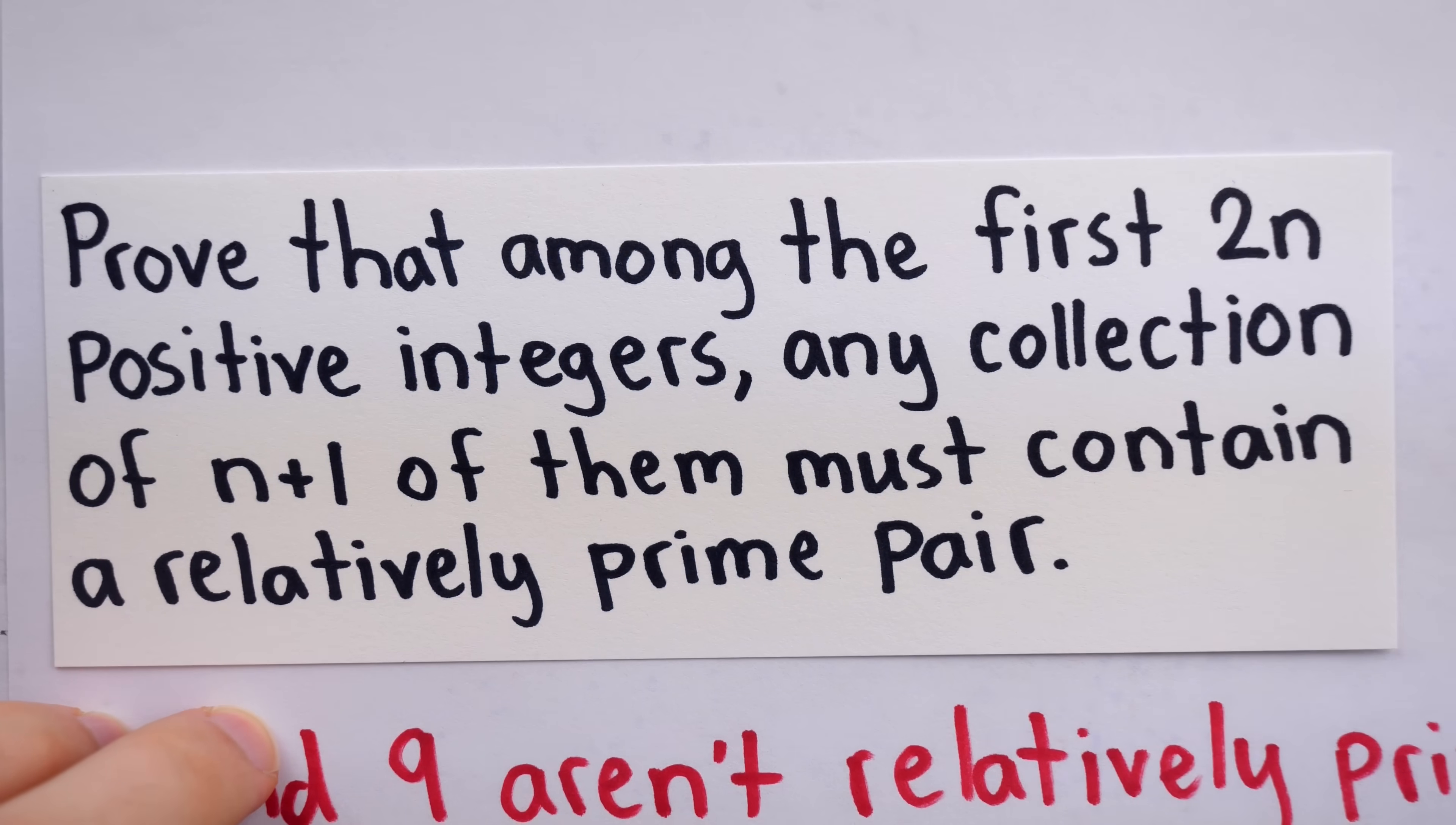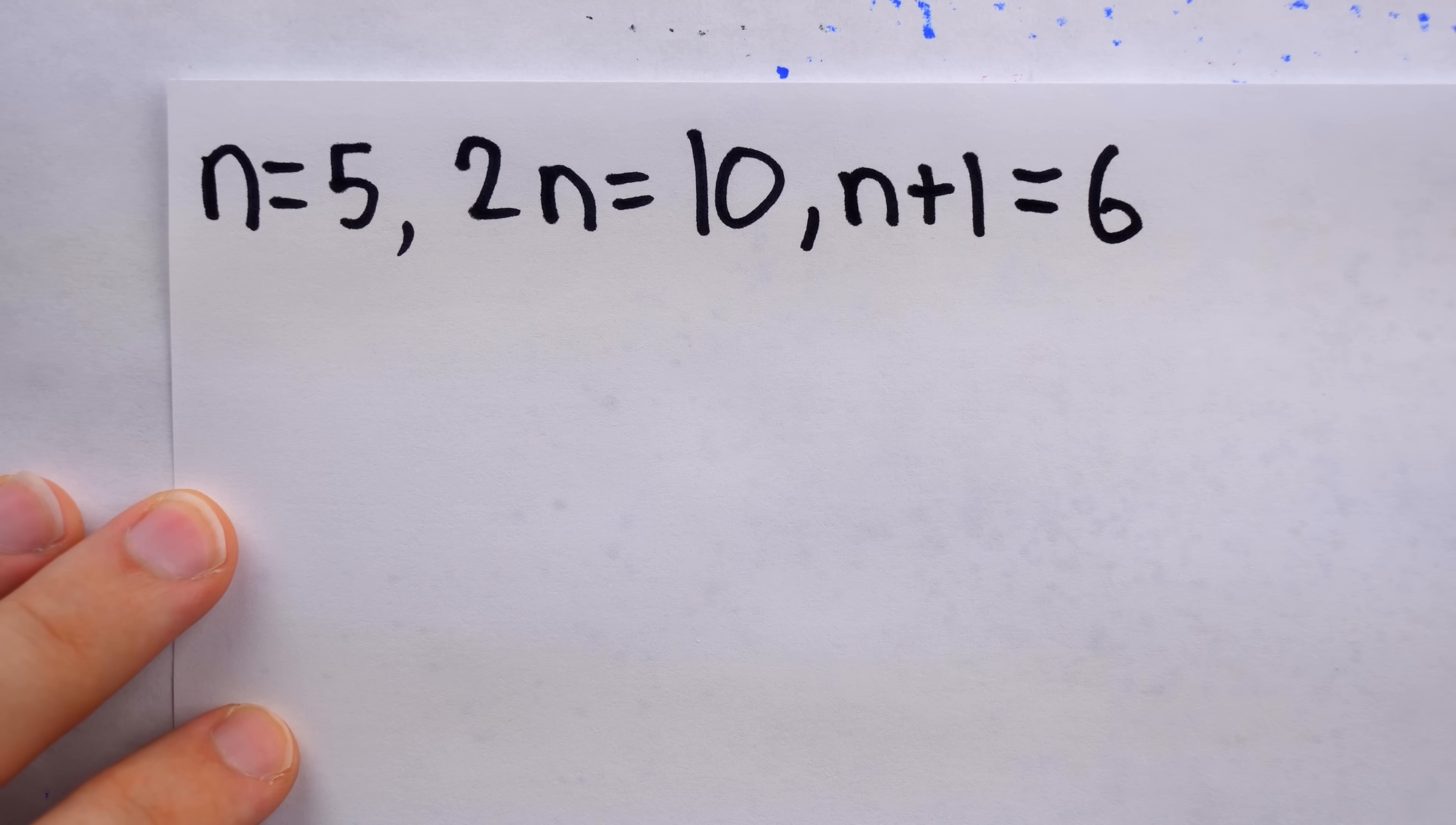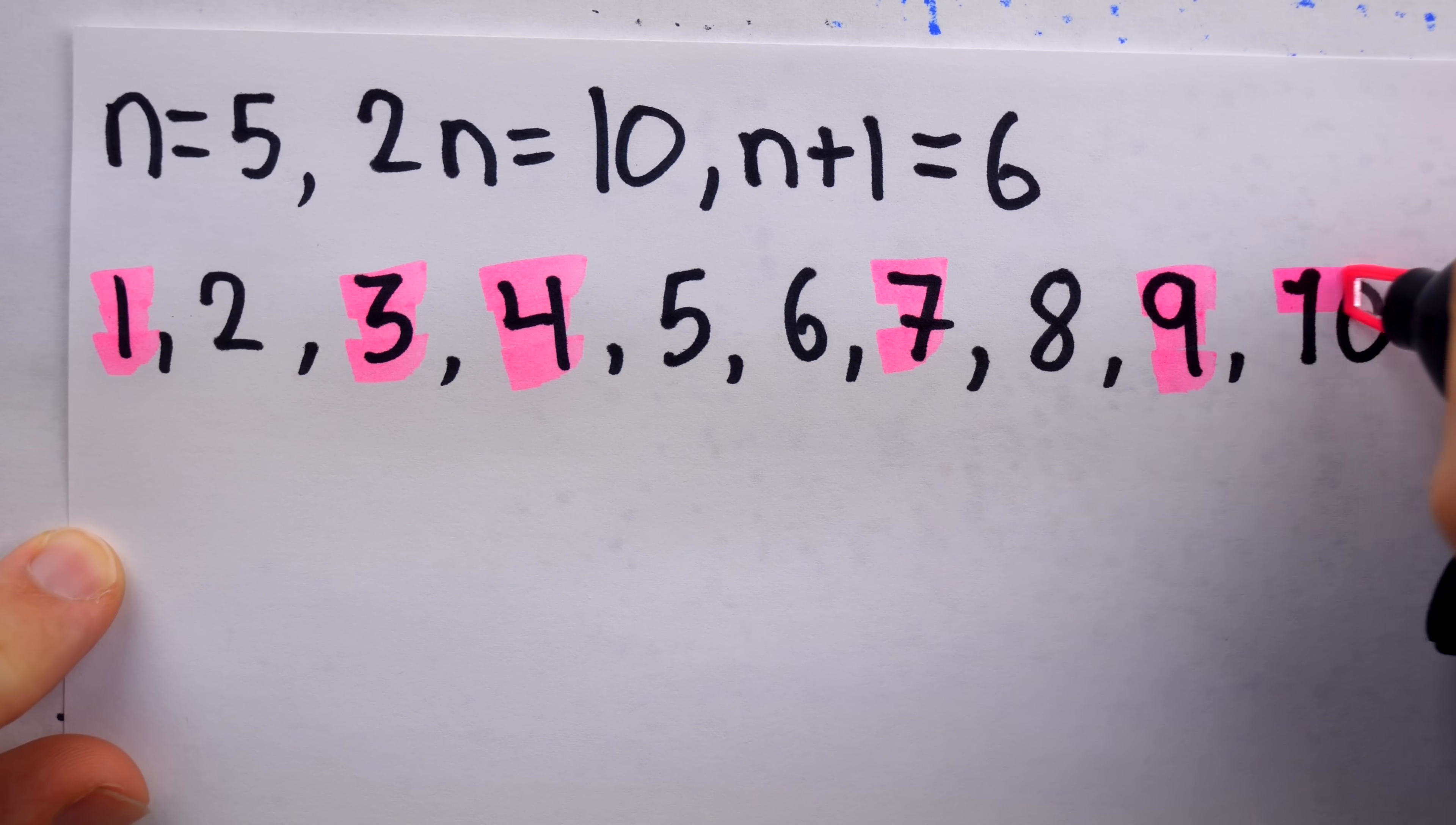So then, let's see an example of the problem statement in action with n equal to 5. If n is set equal to 5, then 2n is equal to 10. And n+1, the number of integers we are selecting, is equal to 6. So the result asserts that no matter which 6 positive integers we select from the first 10, it's guaranteed that our collection will have a relatively prime pair. For example, maybe we select 1, 3, 4, 7, 9, and 10.